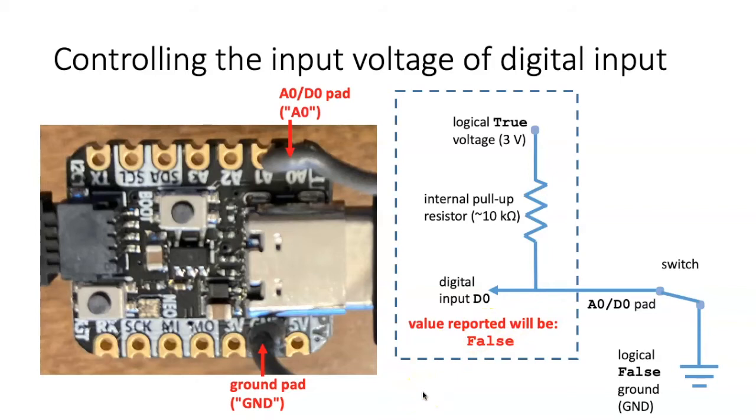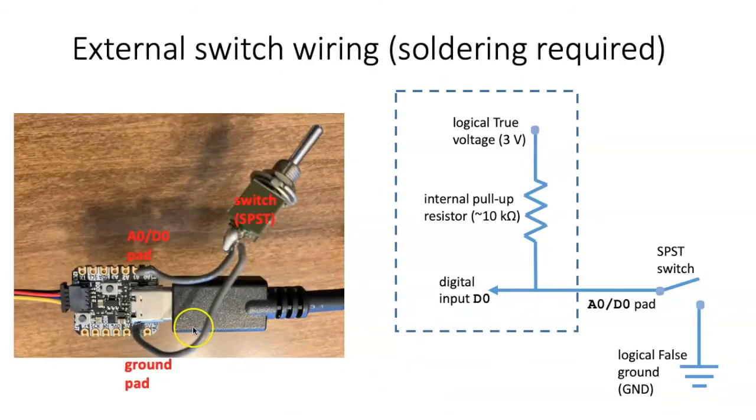In order to enable this, we actually have to do some soldering here. So here I have soldered to a single pole, single throw switch, one end of the switch to the ground pad on the board, and the other one to the A0D0 pad.